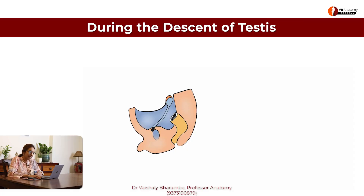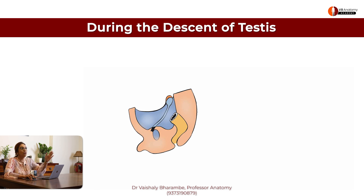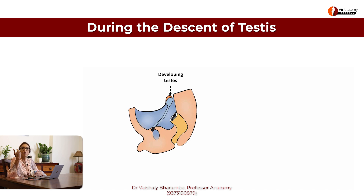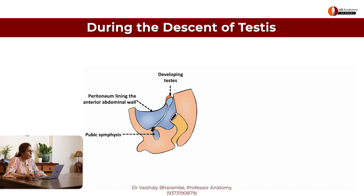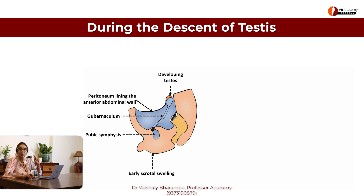What you're seeing here is what is happening during the descent of testes and how it affects and results in formation of hydrocele. What you're seeing here is the developing testes in the dorsal wall of the abdomen, covered by a layer of peritoneum. This is the pubic symphysis, and this here is the gubernaculum attaching the developing testes down to the early scrotum.